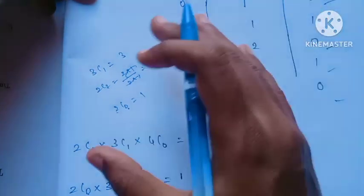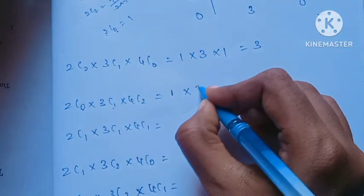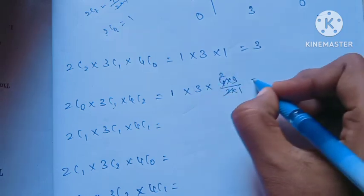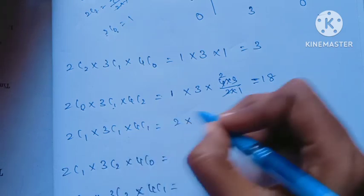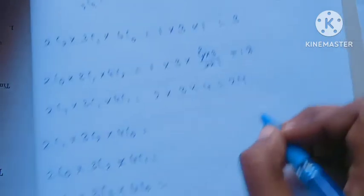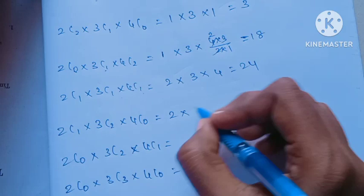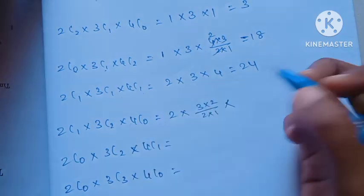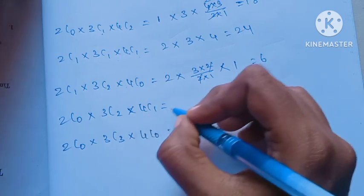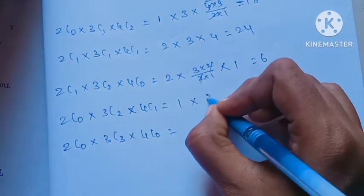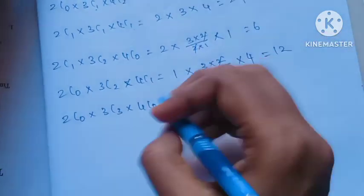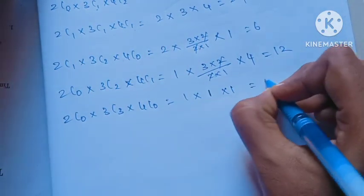Continuing the combination calculations: C(2,1), C(1,2), C(4,1), C(3,1), C(4,C0), resulting in the individual combination values to be added together for the final answer.